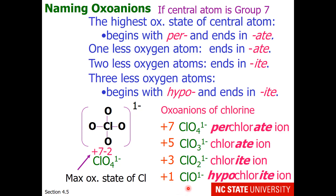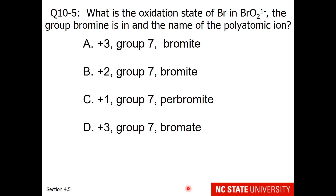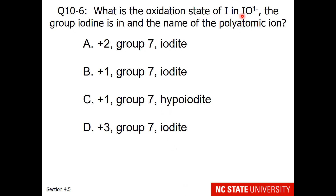Perhaps you're familiar with bleach, which is sodium hypochlorite. Now apply this process to BrO3 1−; bromine is in group 7, so follow that same logic. What if we take an oxygen away to give BrO2 1−? And for variety, move to iodine — also in group 7 — with one oxygen: what is the oxidation state of iodine and the appropriate name of that ion?